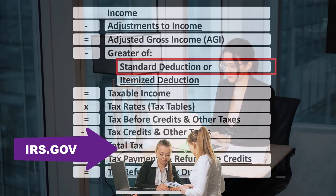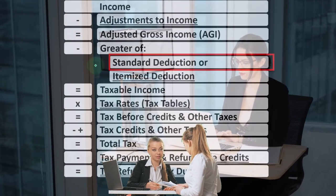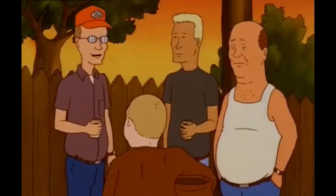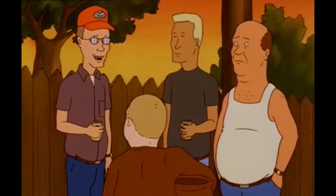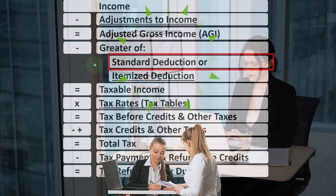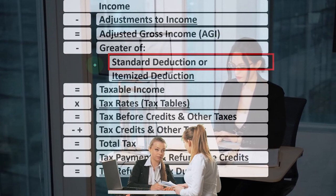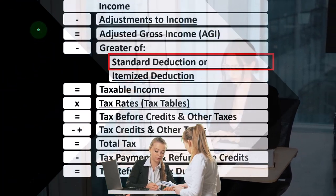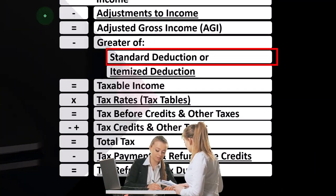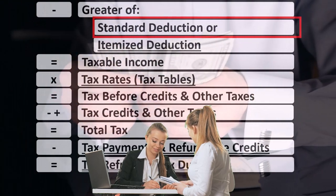If we're looking at the income tax formula, and maybe I'll file a federal income tax return — the Standard Deduction, which you might call the Below-the-Line Deduction, as opposed to the Above-the-Line Deduction, the Adjustments to Income.